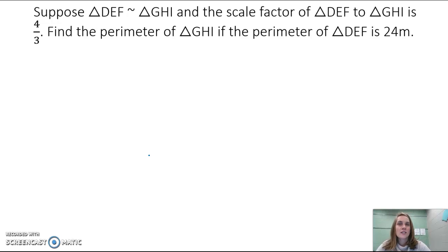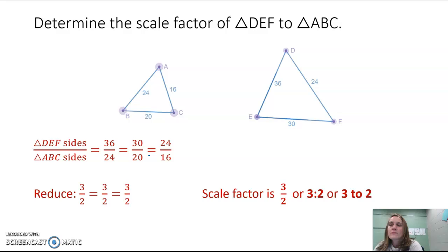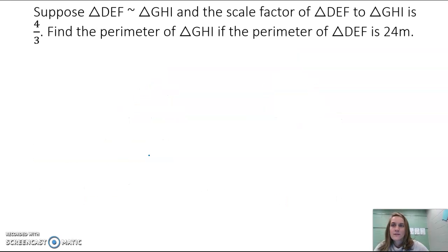I like to write this out mathematically so it's easier to keep organized. We have triangle DEF similar to triangle GHI, and we're given the scale factor of DEF to GHI. DEF is given to us first.